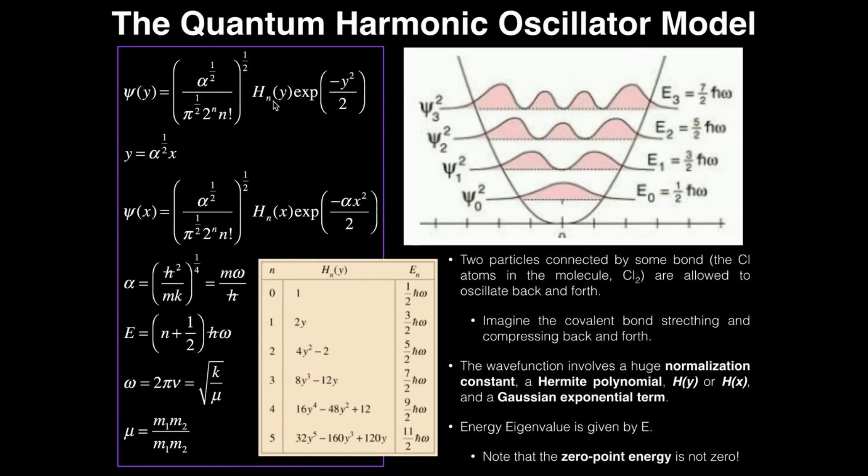The second component, this H as a function of y, this part right here is what's called the Hermite polynomial. This, you basically just look up in a table. These are the Hermite polynomials in terms of y. You can see them right here. And you know which one to use because you're going to be given n. So zero, one, two, and so on and so forth.